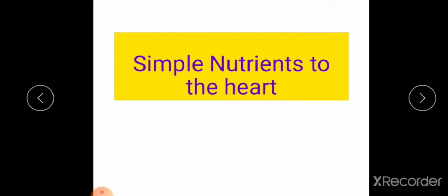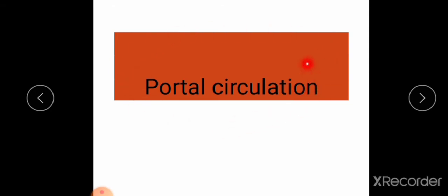Just now we learned about double circulation. In double circulation, from the heart, blood pumps to different parts of the body and to the lungs. How do nutritions absorbed into the blood from the small intestine reach the heart? This takes place with the help of another circulation known as portal circulation. Portal circulation helps to reach simple nutritions to the heart.